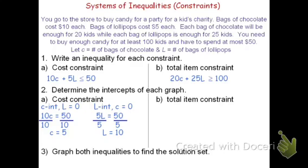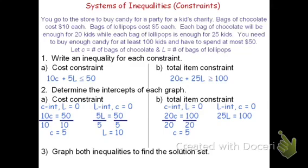For the item constraint, knowing how many bags of chocolate we would need, or how many bags of lollipops. Again, to find a c-intercept, l is 0. This is saying if we had to give all the children chocolates and no lollipops, how many bags of chocolate would we need? Working it out, we would see that we need 5 bags. For the l-intercept, saying that there's no chocolates, we would do 25l equals 100, solve it, and we know that we need 4 bags of lollipops.